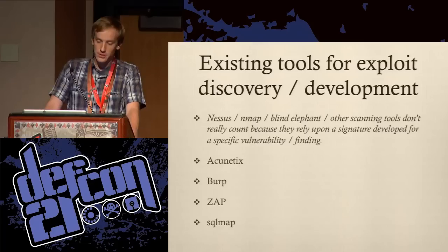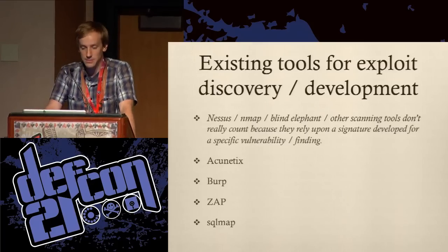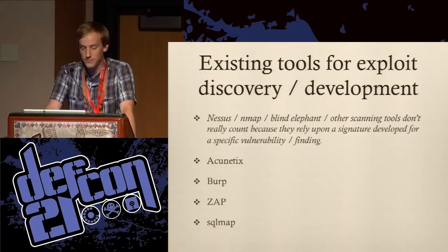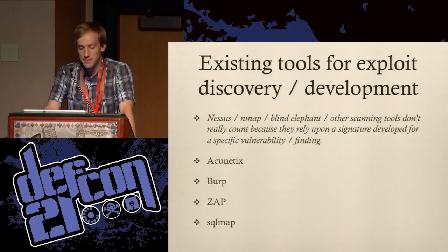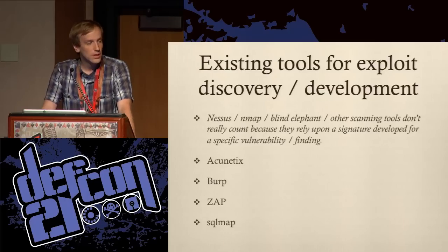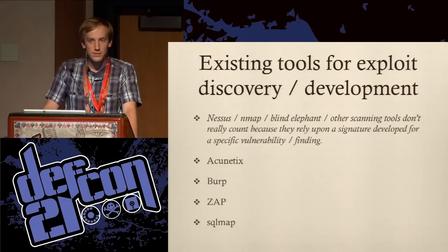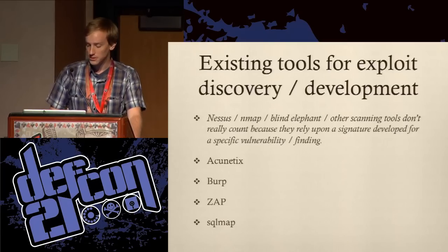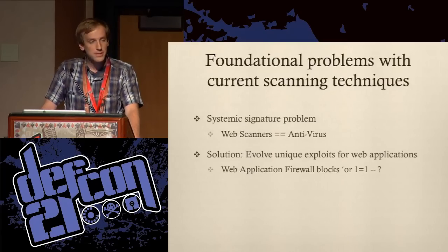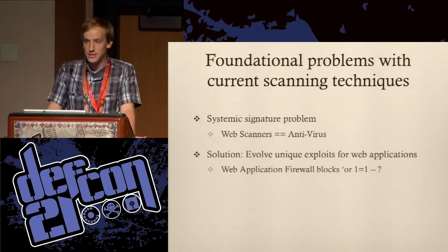There are a number of really good tools out there for exploit discovery and development. I use Acunetix, Burp, Zap, and SQLMap very frequently, and they're all fantastic tools. But running some of the other tools — like Nessus, Nmap, and other scanning tools — I realized there's a very big similarity with an existing industry. And it's a fundamental problem with web application scanners as we know them today.